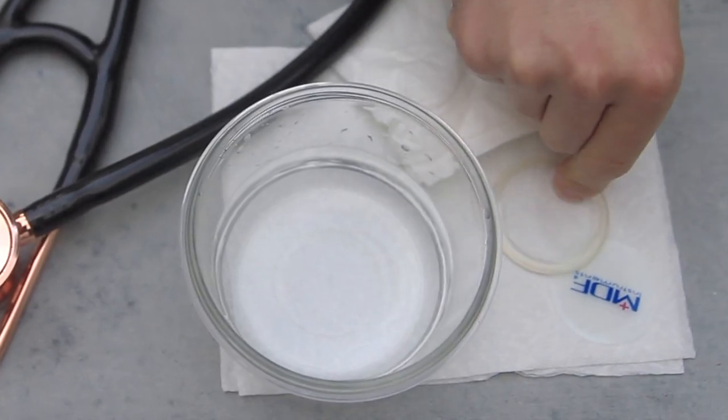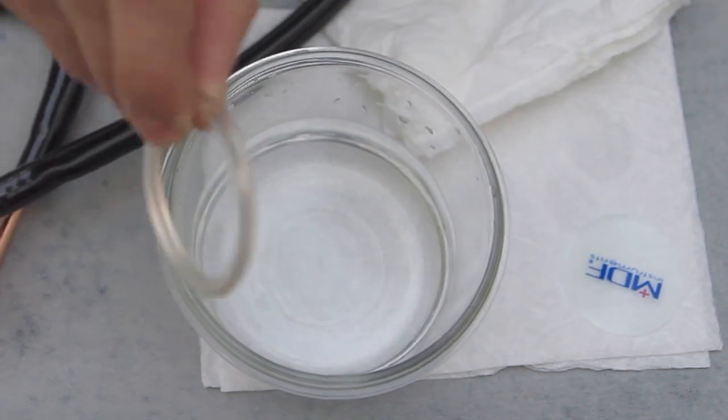To place a diaphragm into your retaining ring, warm up the ring to make it more flexible. You can warm up the retaining ring in warm water or in a cup with a blow dryer.